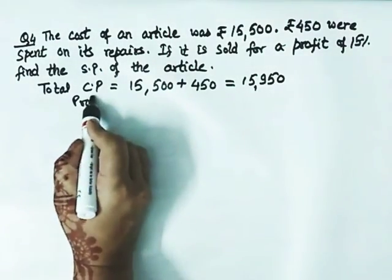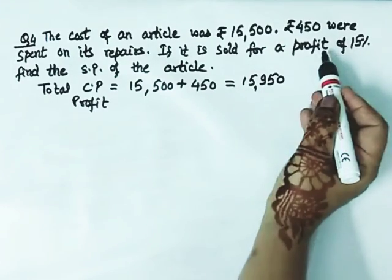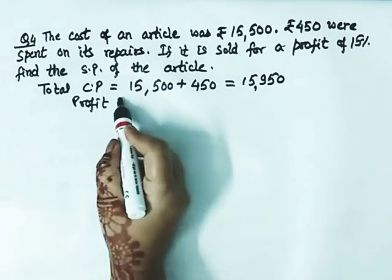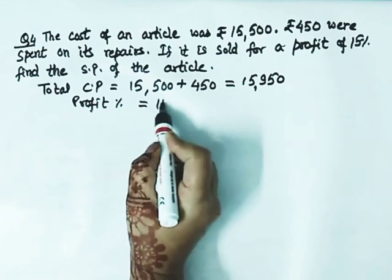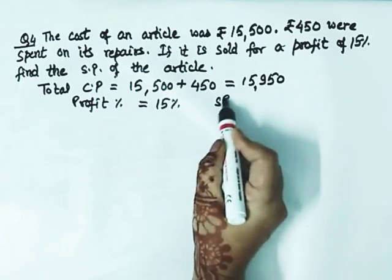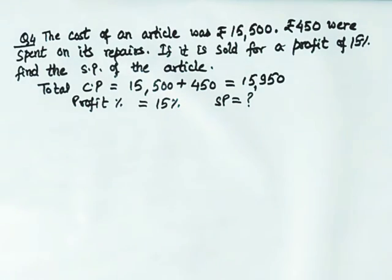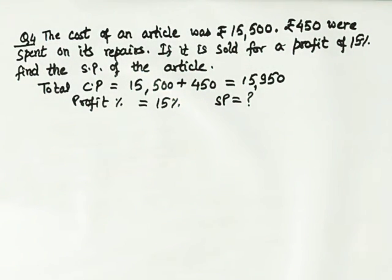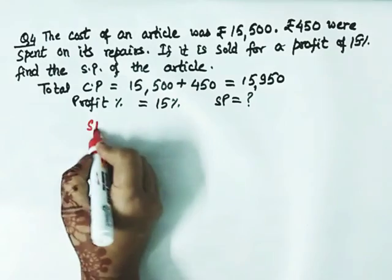The profit percent given is 15%. If it is sold at a profit percent of 15%, then we have to find the SP. The same way as I told you in the last video, when you have profit percent and CP, what is the formula for SP? The SP formula is CP multiplied by 1 plus P by 100.